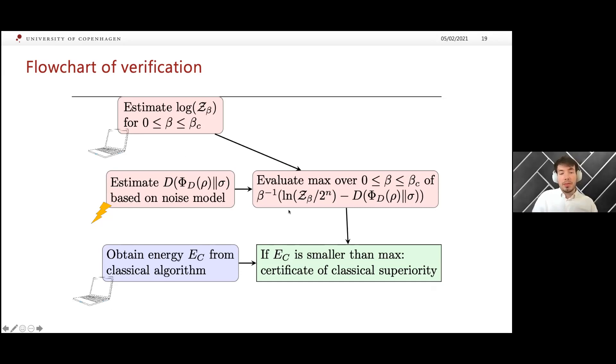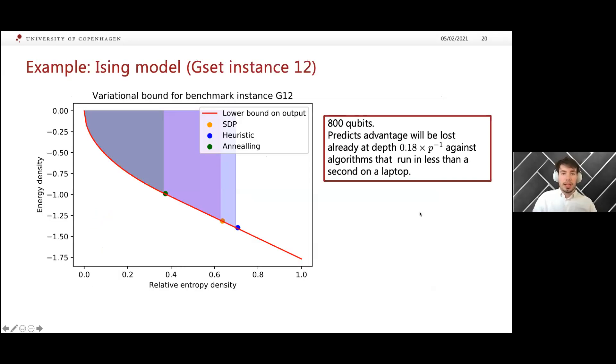You estimate this relative entropy just based on the noise model. Then you evaluate this bound over here for the range of betas for which you computed this partition function, and you obtain a lower bound on the expected energy of the output. Then you can just run your classical algorithm and compare the two. You evaluate this bound and you evaluate the classical value you obtain, and then you can compare and see at which depth you actually lose advantage. This is something you can do at large scale.